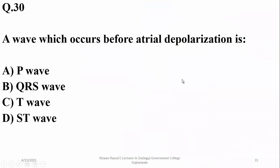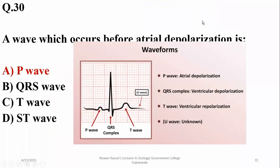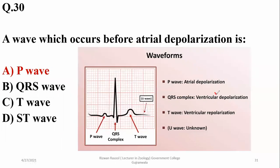The P wave occurs before atrial depolarization. The QRS complex depicts ventricular depolarization, and the T wave represents ventricular repolarization.